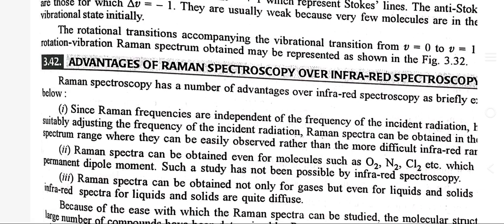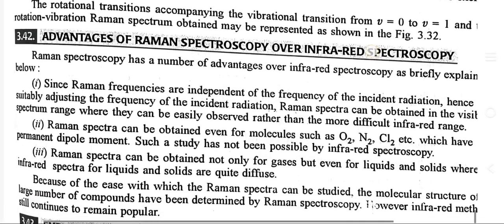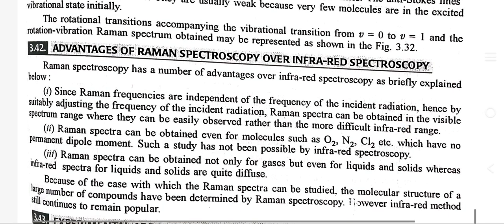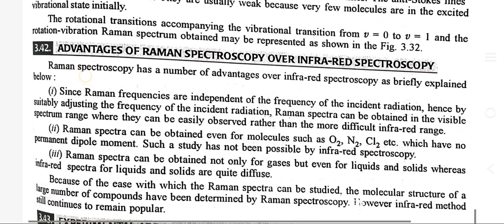Advantages of Raman spectroscopy over infrared spectroscopy: Raman spectroscopy has a number of advantages over infrared spectroscopy. Since Raman frequencies are independent of the frequency of incident radiation, by suitably adjusting the frequency of the incident radiation, Raman spectra can be obtained in the visible spectrum range from where they can be easily observed, rather than the more difficult infrared range. Raman spectra can be obtained even for molecules such as O₂, N₂, and Cl₂ which have no permanent dipole moment — such a study has not been possible by infrared spectroscopy.